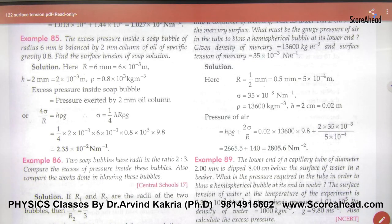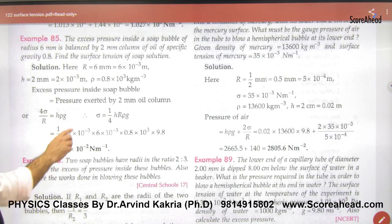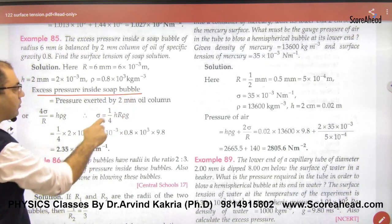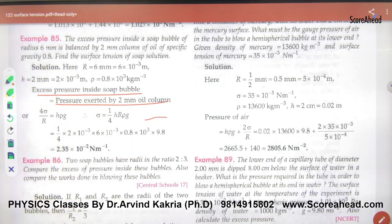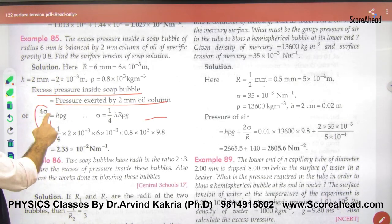So it has clearly mentioned in the question that in any bubble, excess pressure inside a soap bubble is pressure exerted by 2 mm of oil column. So what is excess pressure in a soap bubble? What is 4σ/r?